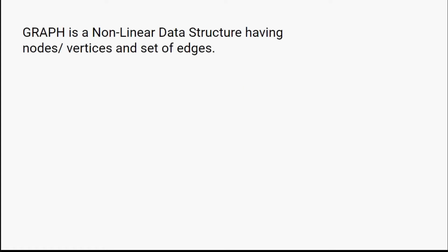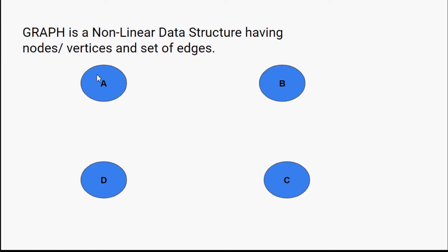First of all, let's understand what a graph is. A graph is a non-linear data structure having nodes or vertices and a set of edges. These are the different points — A, B, C, D — these scattered points are known as nodes, also called vertices. If I have a single point I call it a vertex; if I have more than one point I call them vertices.